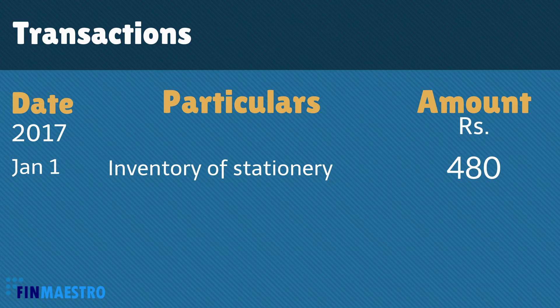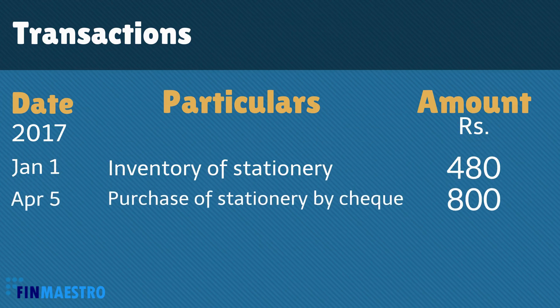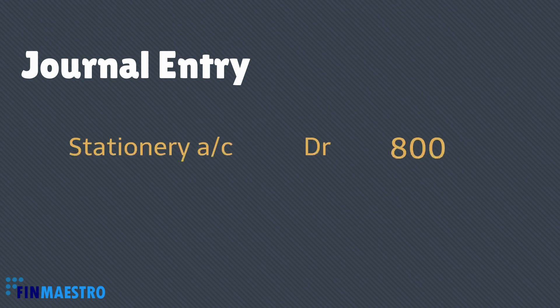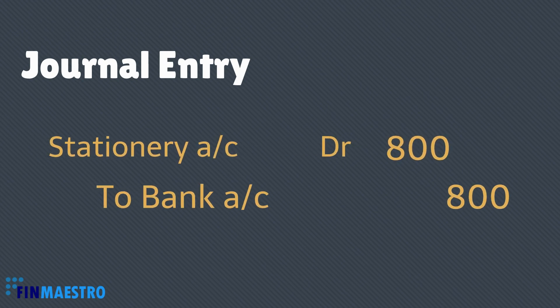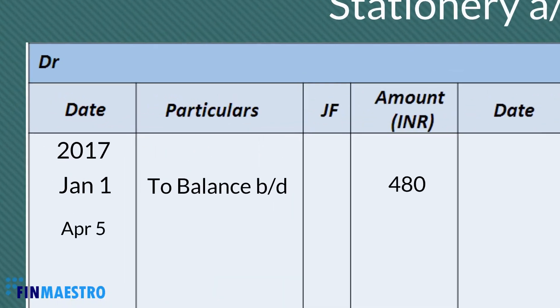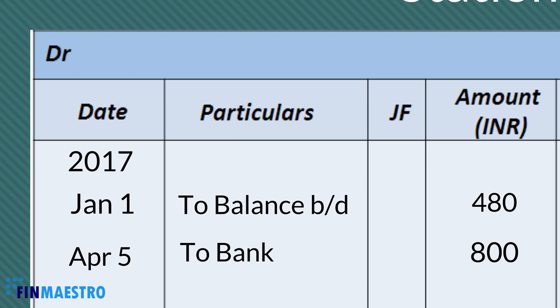Next, we made a purchase of stationery by paying Rs. 800 through cheque. The journal entry for this transaction is: Stationery Account Rs. 800, To Bank Rs. 800. Since a purchase will increase the balance of stationery, we write this on the debit side. So let's go to the debit side and write 'To Bank', amount Rs. 800.